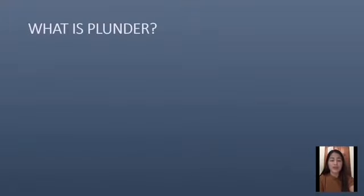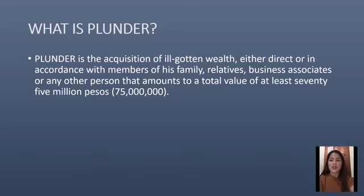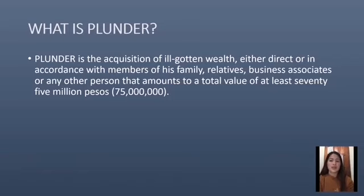Next is plunder. What is plunder? Plunder is the acquisition of ill-gotten wealth, either directly or in connivance with members of one's family, relatives, business associates, or any other person, that amounts to a total value of at least 75 million pesos. Ill-gotten wealth may be in the form of an asset, property, business enterprise, or material possession.